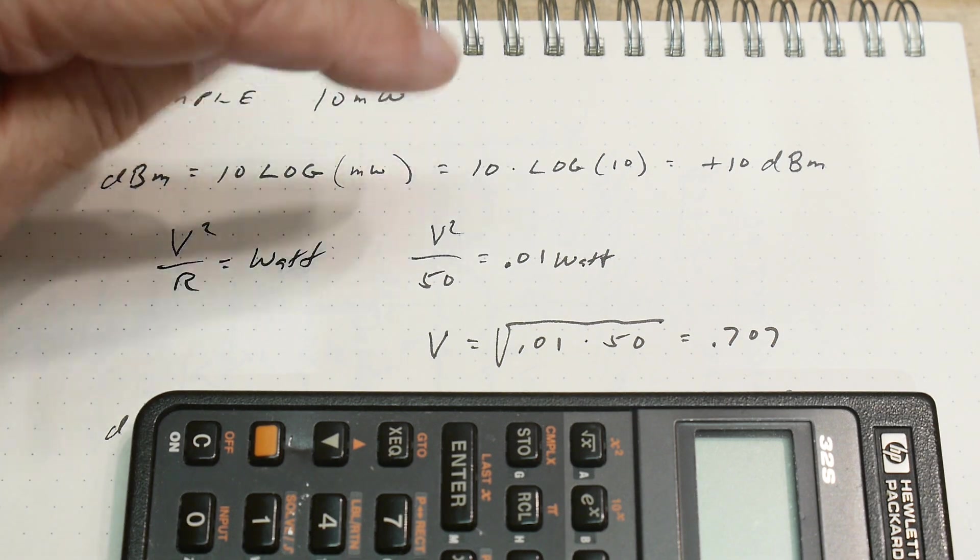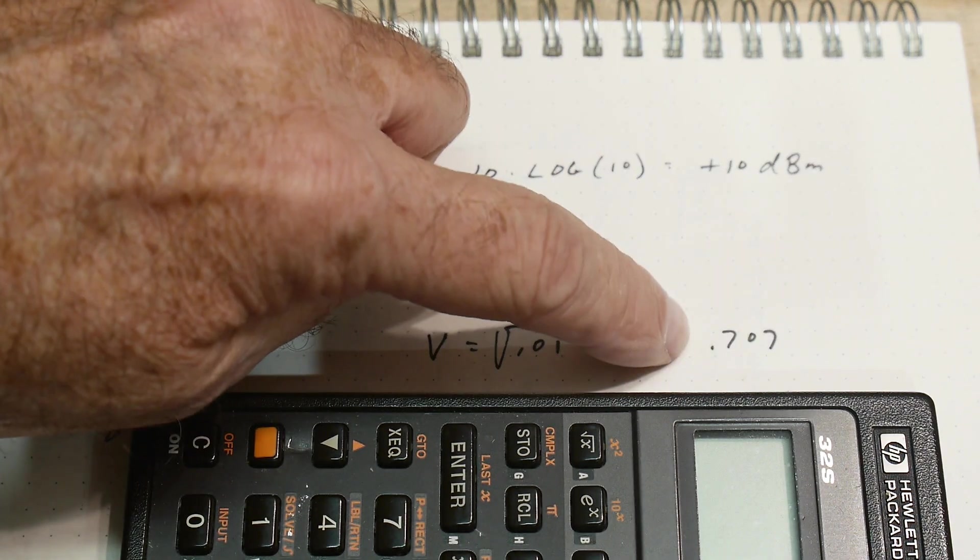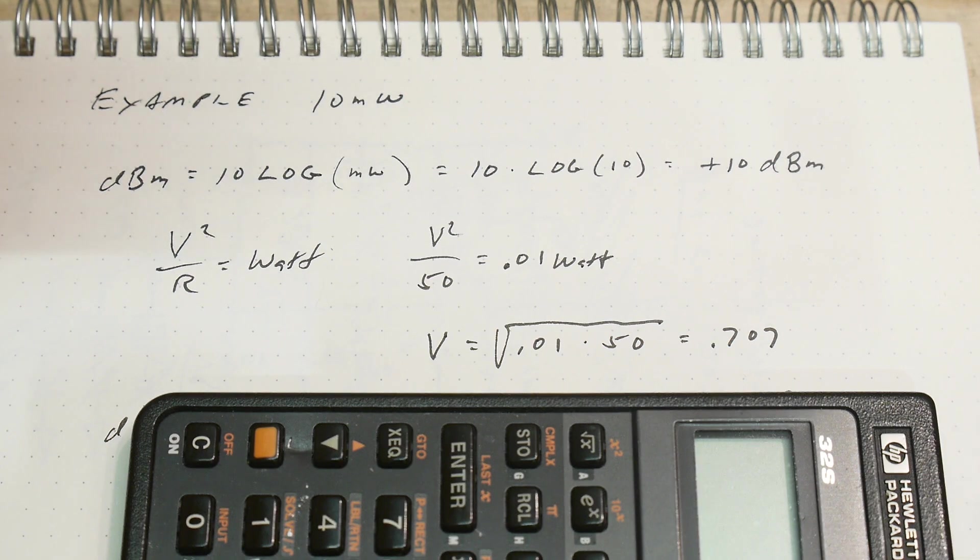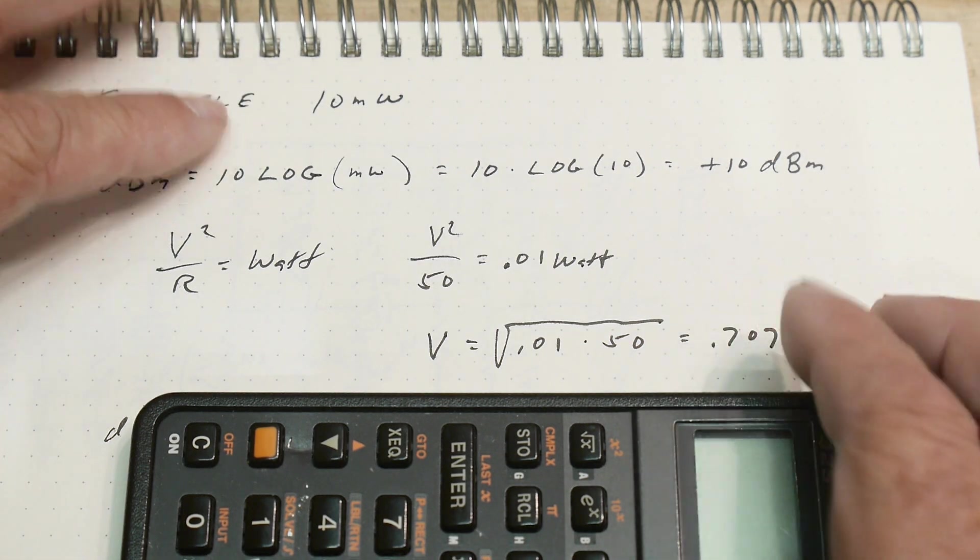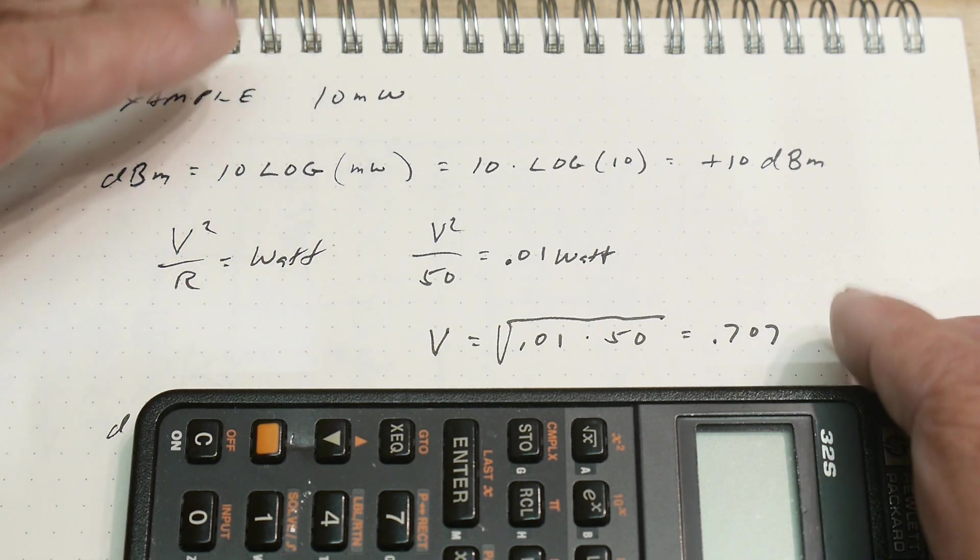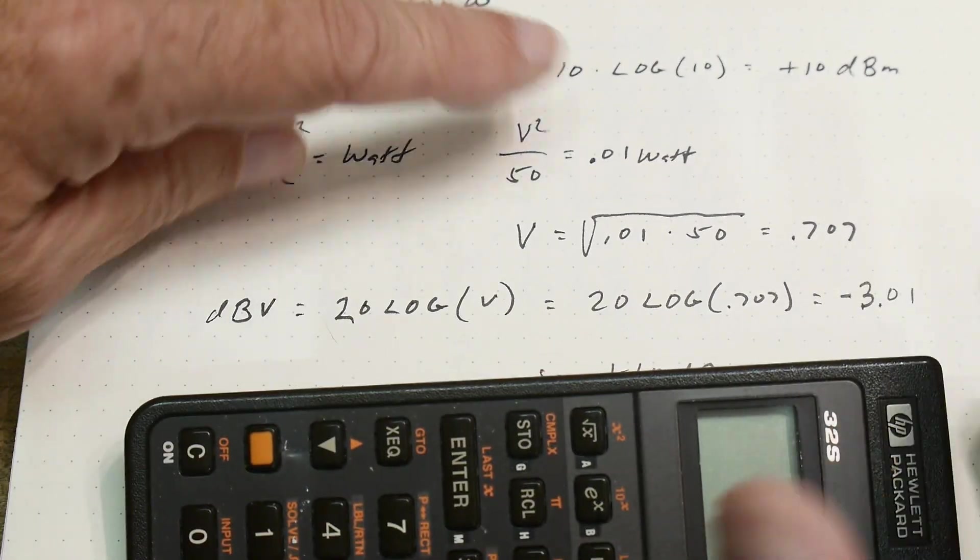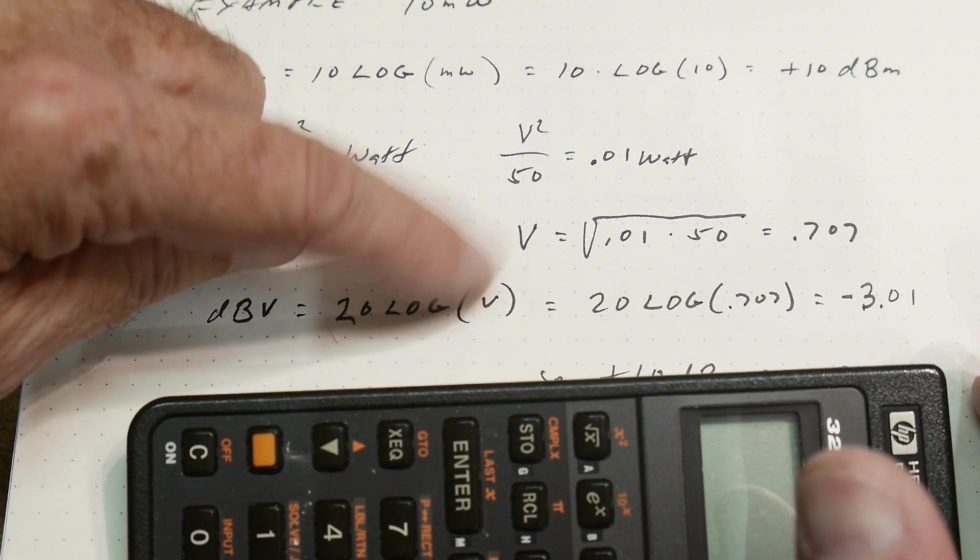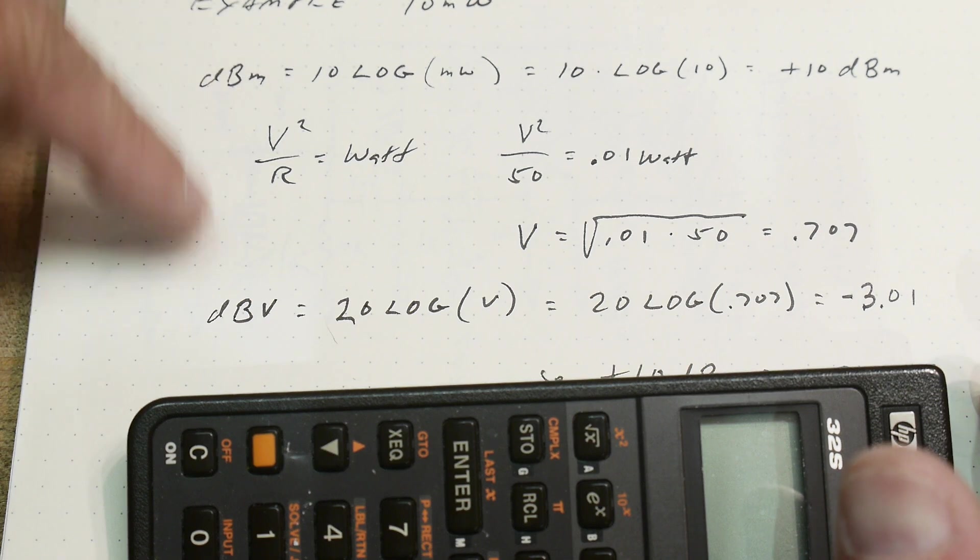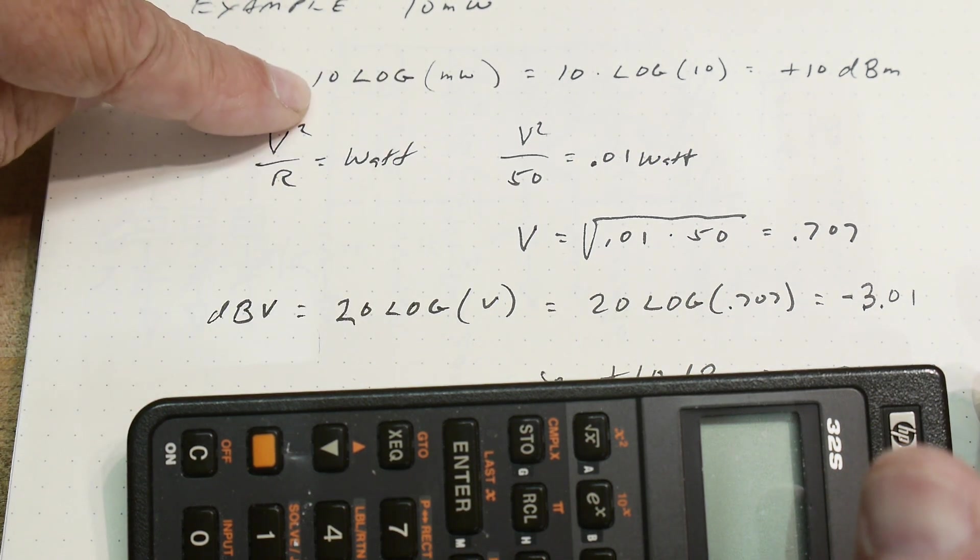That's volts RMS, the volts for 10 milliwatts. So 10 milliwatts is plus 10 dBm. It's also 0.707 volts. Well we don't want volts, we want dB volts. So dB volts is a little bit different than dB watts.